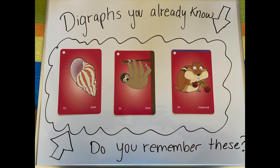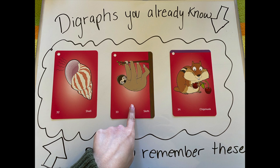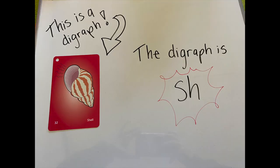We have the sloth card, and we have the chipmunk card. The shell card goes sh. The sloth card goes th. And the chipmunk card goes ch. Now, the first digraph we are going to be diving into today is the digraph sh, like in the shell card.